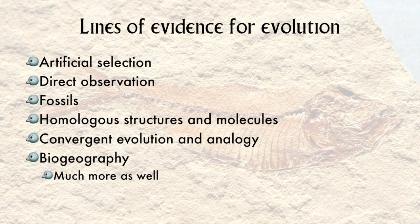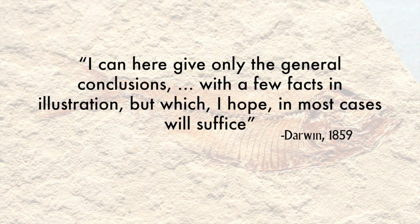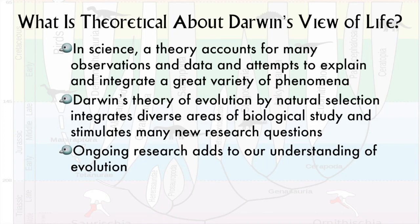To sum up this section on lines of evidence for evolution, there is an overwhelming amount of evidence that has accumulated since Darwin's time. And to borrow a quote from Darwin himself: 'I can here give only the general conclusions, with a few facts and illustration, but which, I hope, in most cases will suffice.' So with all this evidence, why is evolution still called a theory rather than a law? First of all, a theory is quite a lofty designation in science — there's really nothing 'just' about it. But what makes a theory powerful is that it isn't fixed and rigid like a law. It's like a well-written book that has many blank pages waiting to be filled by scientists, possibly even you, in the future.